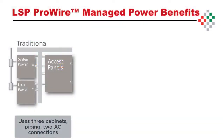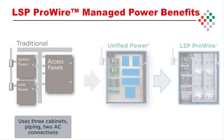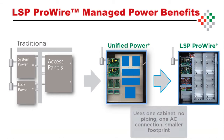The traditional dual voltage access installation has consisted of two or more power supply enclosures and one or more access control systems mounted to the wall and piped together. LSP has integrated the power, power distribution, and access control into one listed solution.